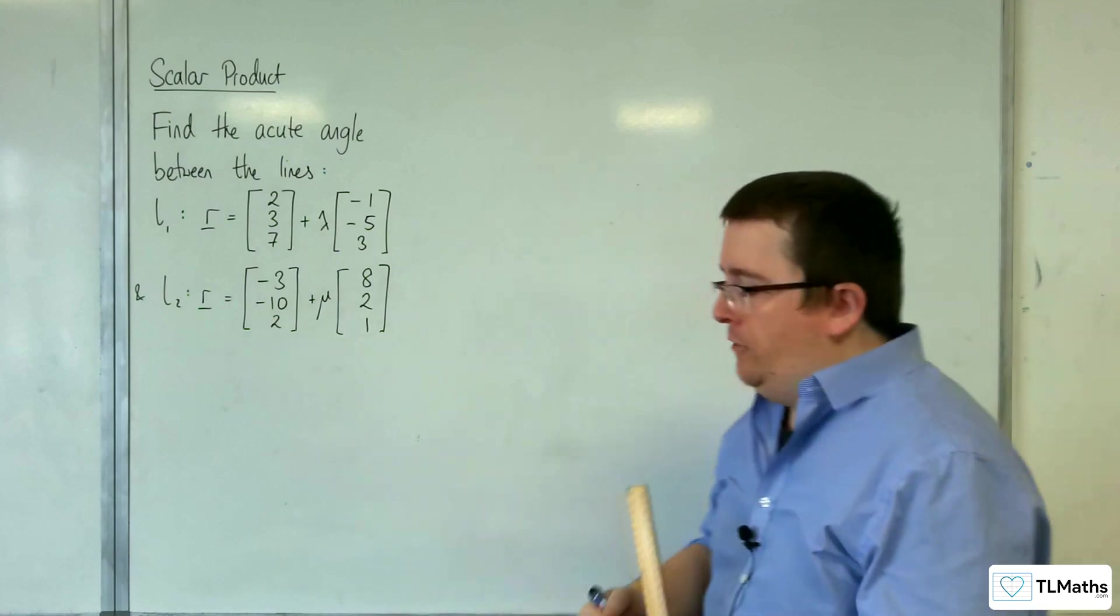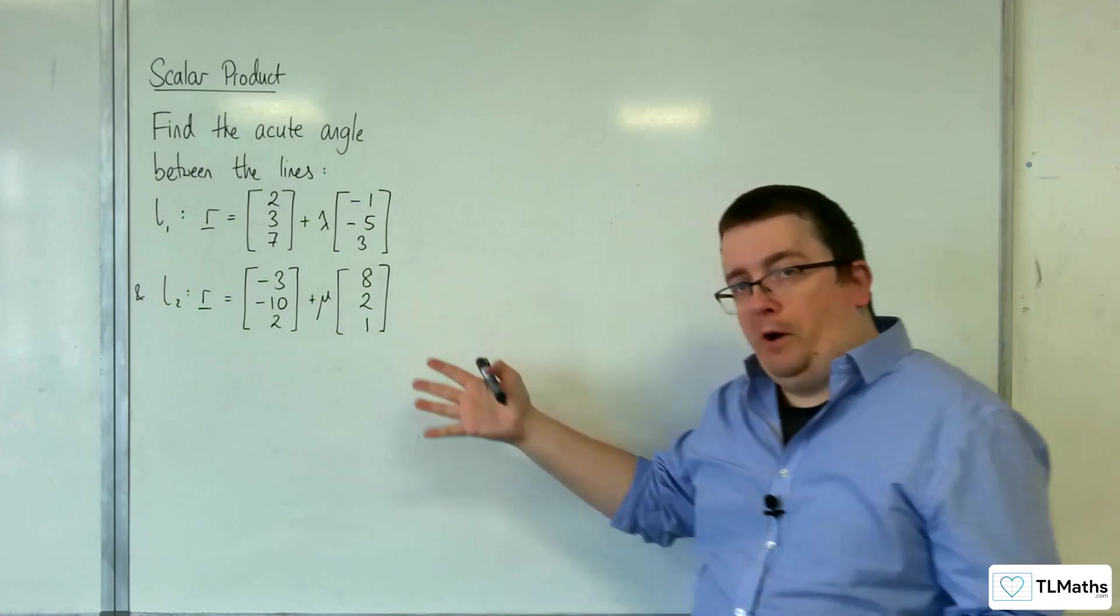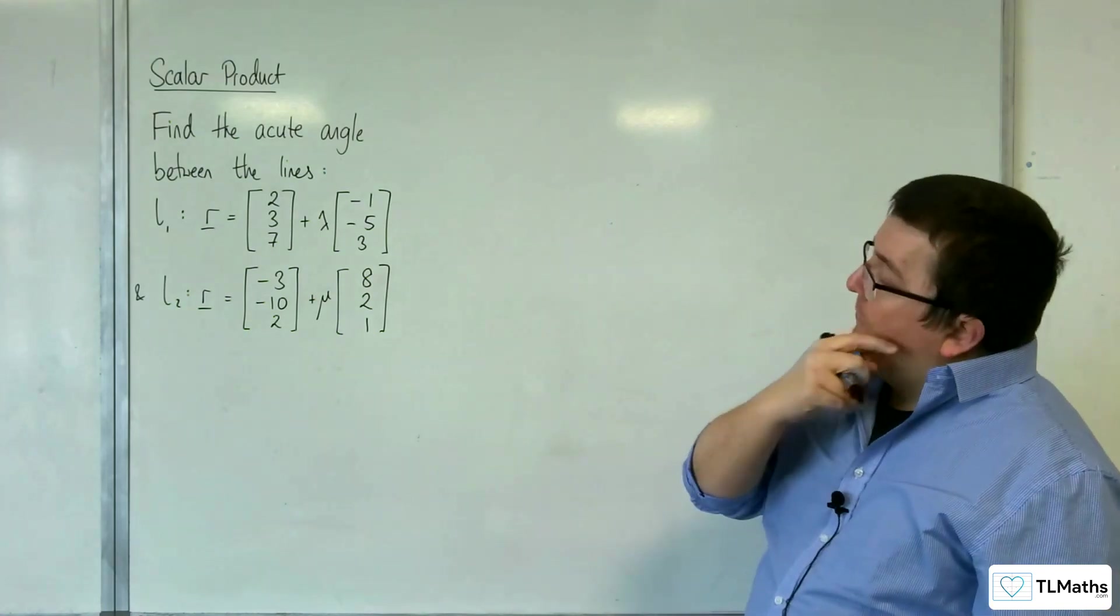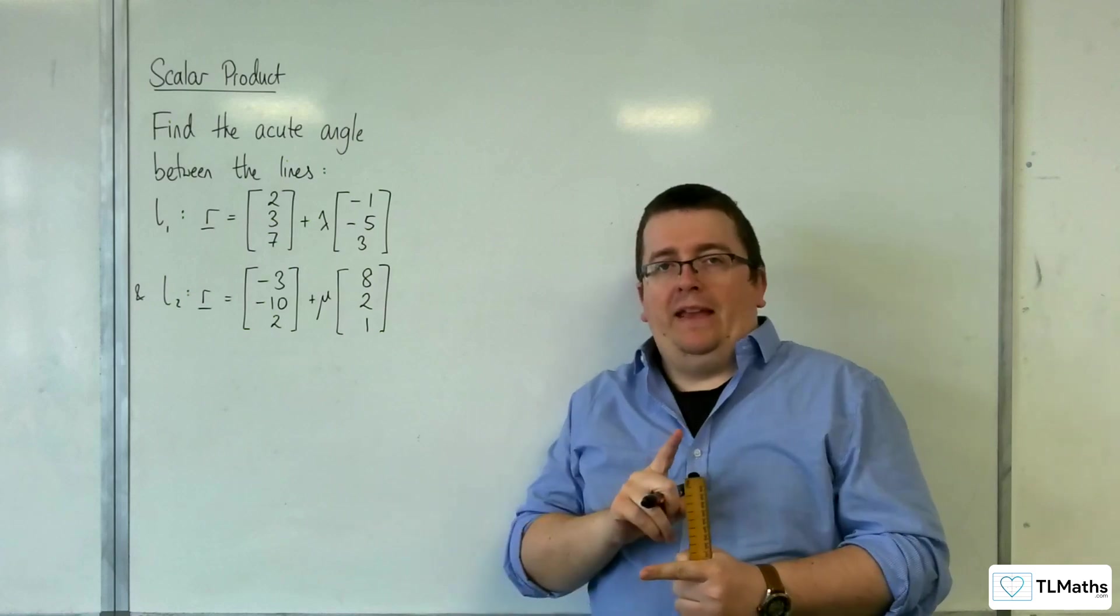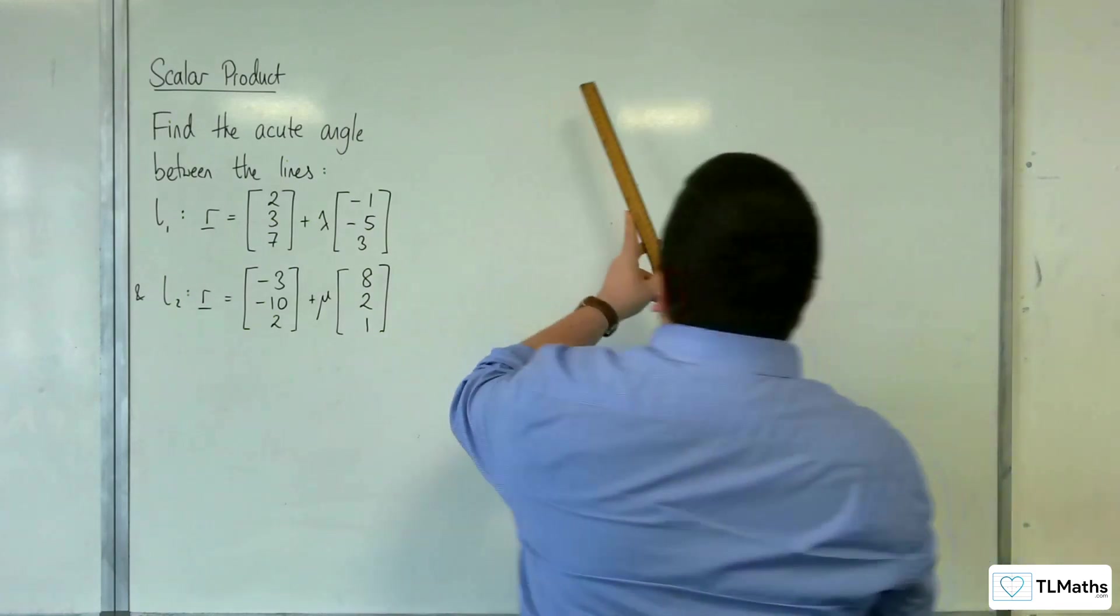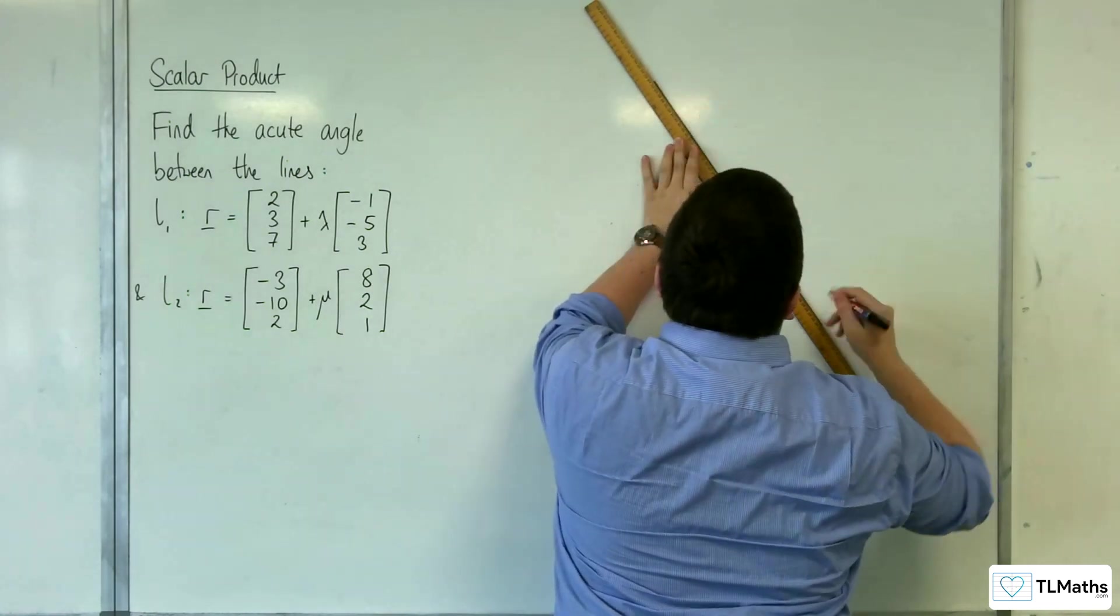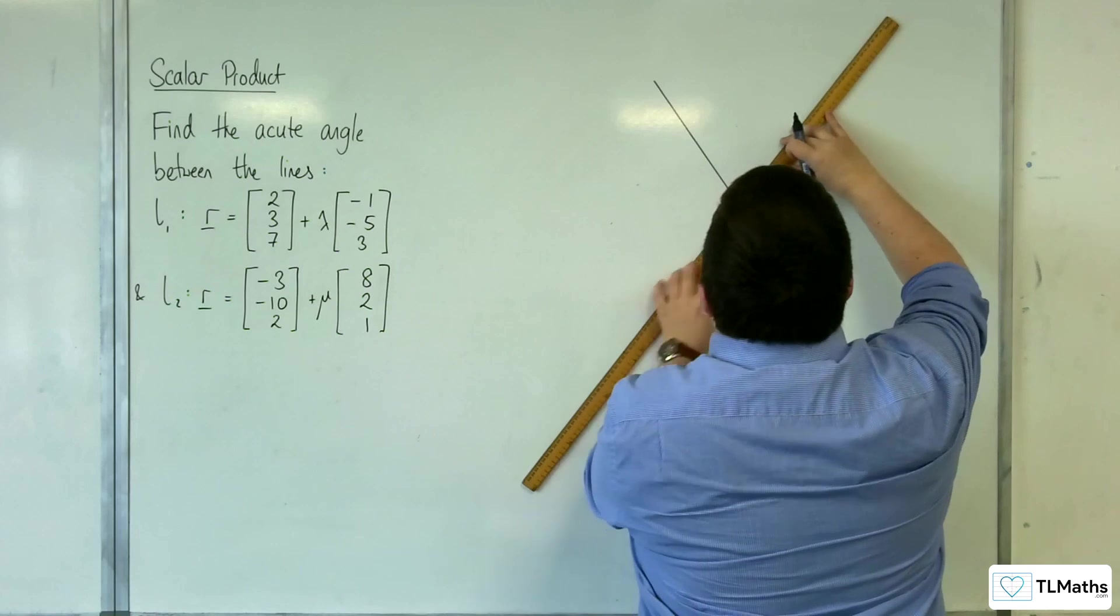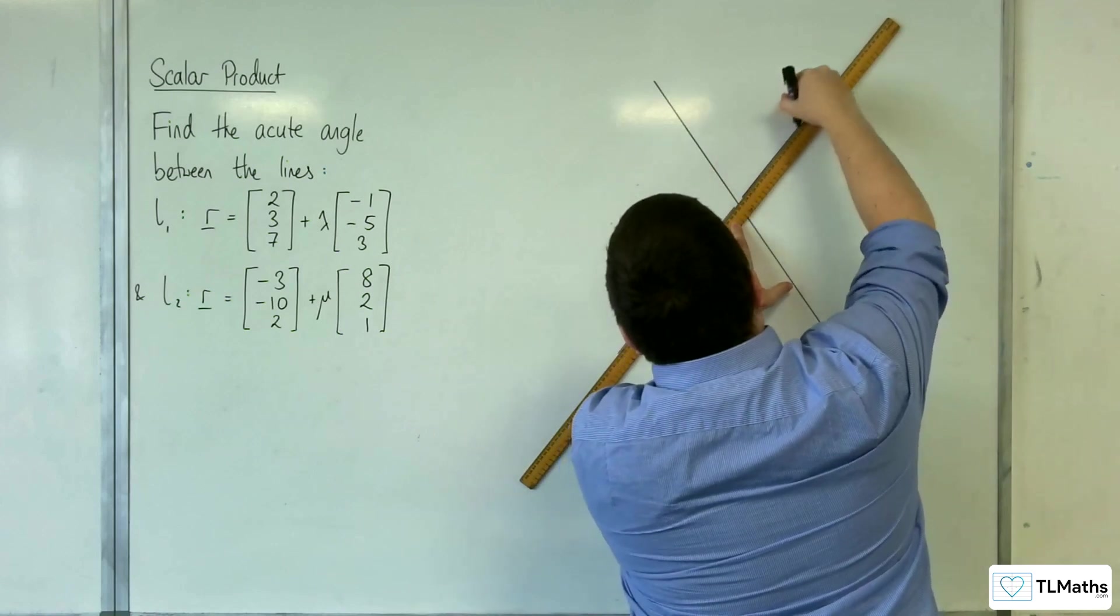So what you need to get your head around is that I made up these two lines on the spot. The likelihood of them intersecting is very slim indeed. I don't know, I've just made the numbers up.